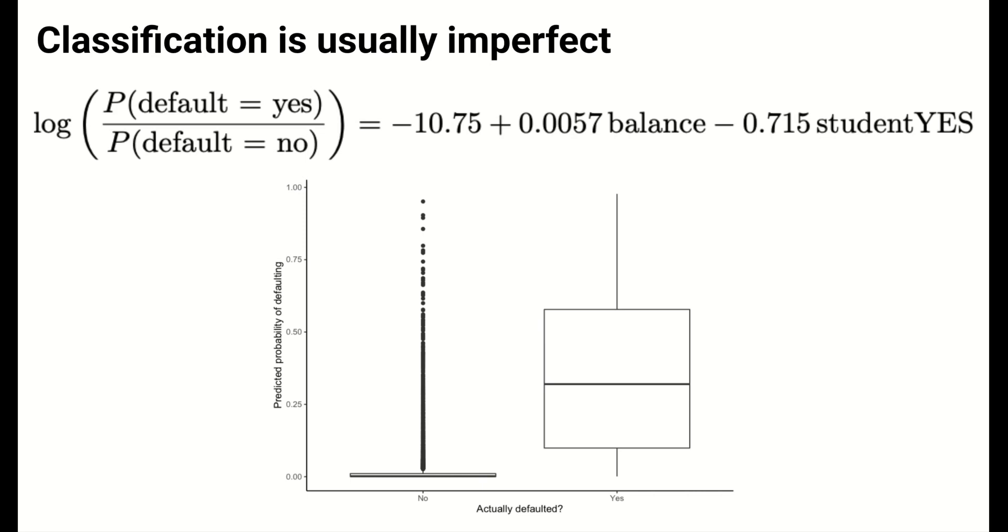The box plots below show the predicted probabilities of defaulting for individuals in the training set. The left box plot for those who actually did not default and the right box plot for those who actually did. Because the probabilities in the two groups are never perfectly separated by any probability threshold, the model's predictions on the training data, and thus almost certainly on any external test data, will be subject to error, and it's our job as analysts to explore and characterize this error.